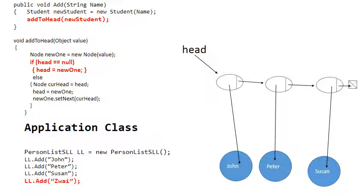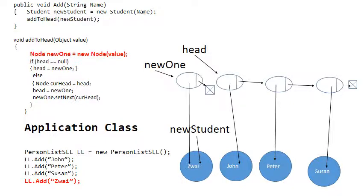In this video I'm not going to deal with the scenario where the head is null because it's very similar to when adding to the tail. You do exactly the same thing. So we want to add Zwei to the list, and we want to add Zwei to the head of the list.